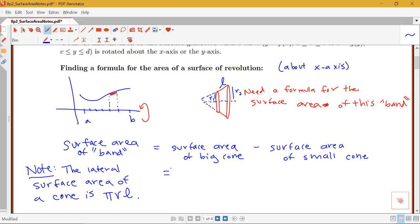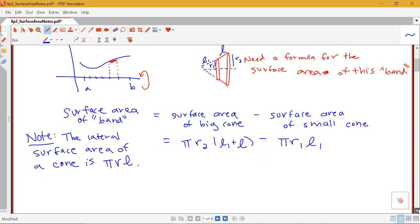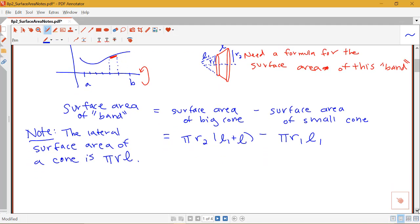So using what we have here, notice that the surface area of our big cone will be π times R2 times the whole length of the big cone. So let's label this other little part L1. So I would have L1 plus L here minus the surface area of that small cone. Well, that would be π times R1 times L1. So then we can go through this doing a little bit of algebra and see how we can simplify this down to a nice formula for ourselves.